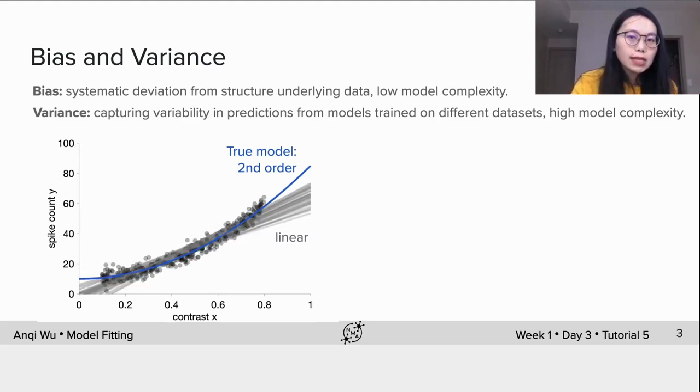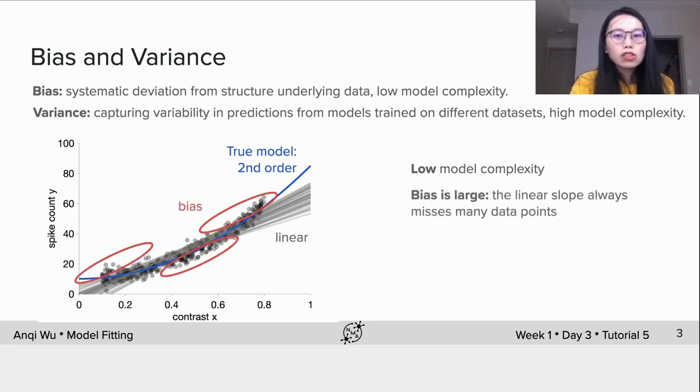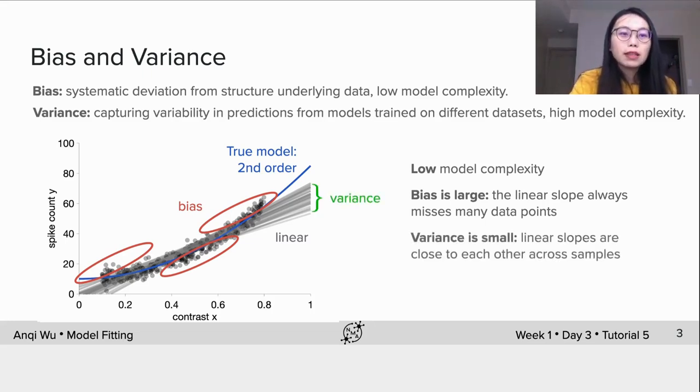We can repeat the same generating and fitting procedure for many times and plot all lines together. We can say when the model complexity is low, which is the first order polynomial here, the linear slope always misses many data points. Thus the bias is large. But these linear slopes are close to each other across all data samples. Therefore the variance is small.